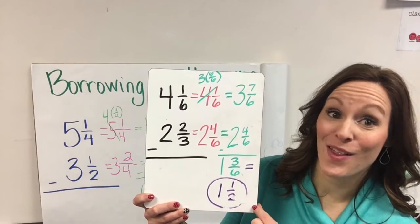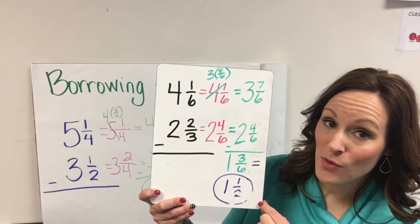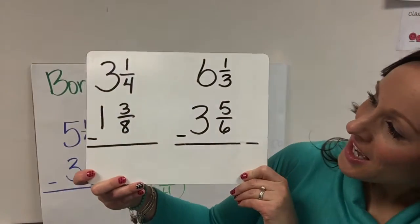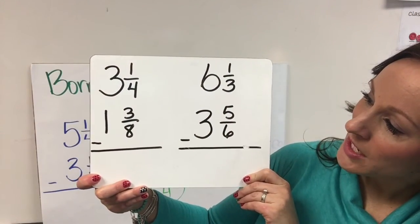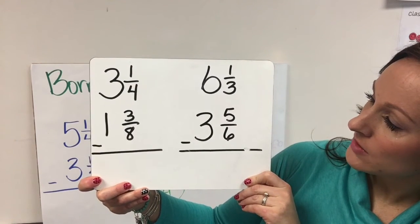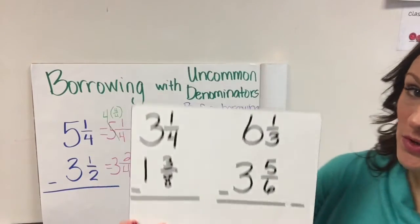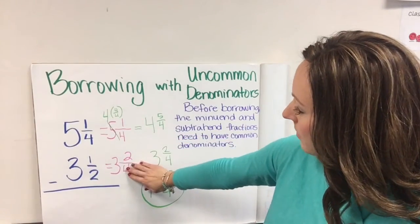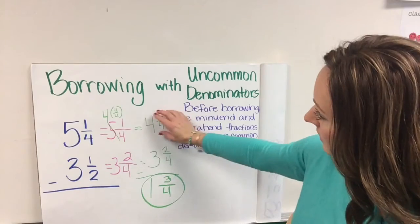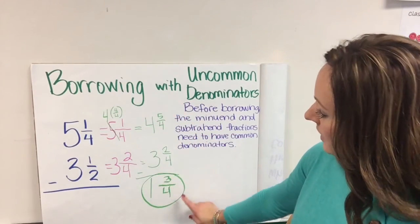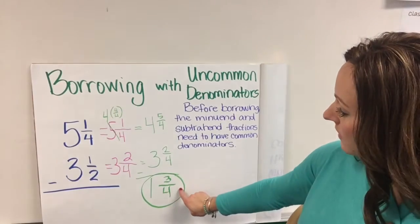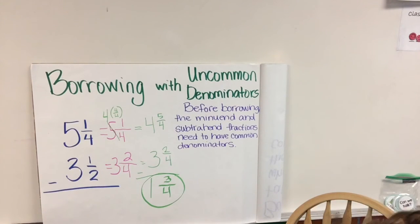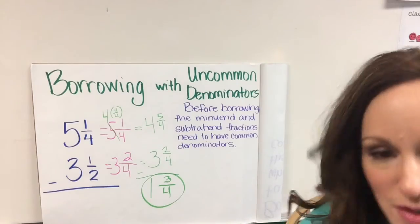I circled my answer, because it's a lot of steps and a lot of work — it would get very confusing to know what your answer is if you don't circle it in a problem like this. Now for your practice, I want you to do 3 and 1 fourth minus 1 and 3 eighths, and 6 and 1 third minus 3 and 5 sixths. Follow this model: make sure you have your equal sign, carry your problem over with common denominators, then do your borrowing. Do your work, and if your answer is already reduced, circle it; if not, put your equal sign and reduce it. Both of these answers will need to be reduced.